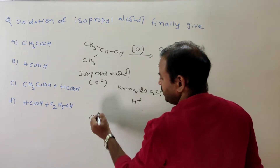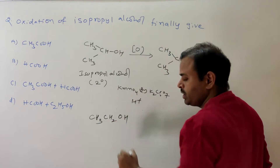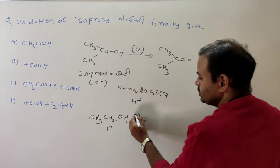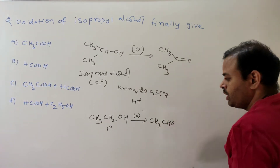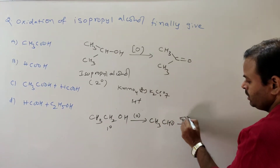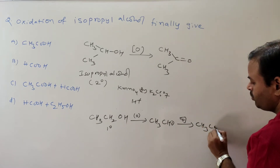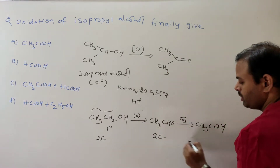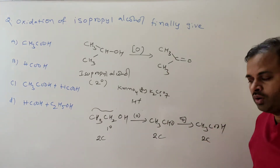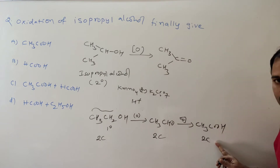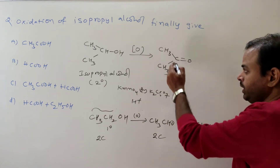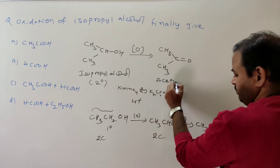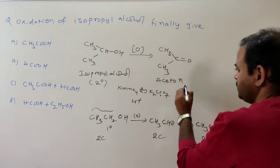In the previous question it was primary alcohol, CH3CH2OH — a 2-carbon primary alcohol. Now this is secondary alcohol. Secondary alcohol converts into the corresponding ketone. Here, the ketone is acetone. Two carbons give a 2-carbon carboxylic acid; the ketone here is on the head — that's acetone.